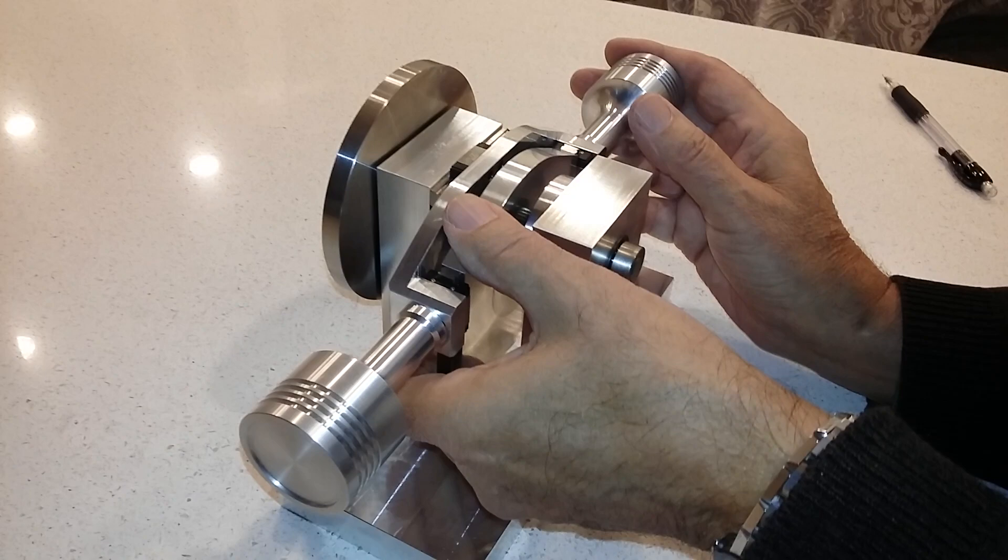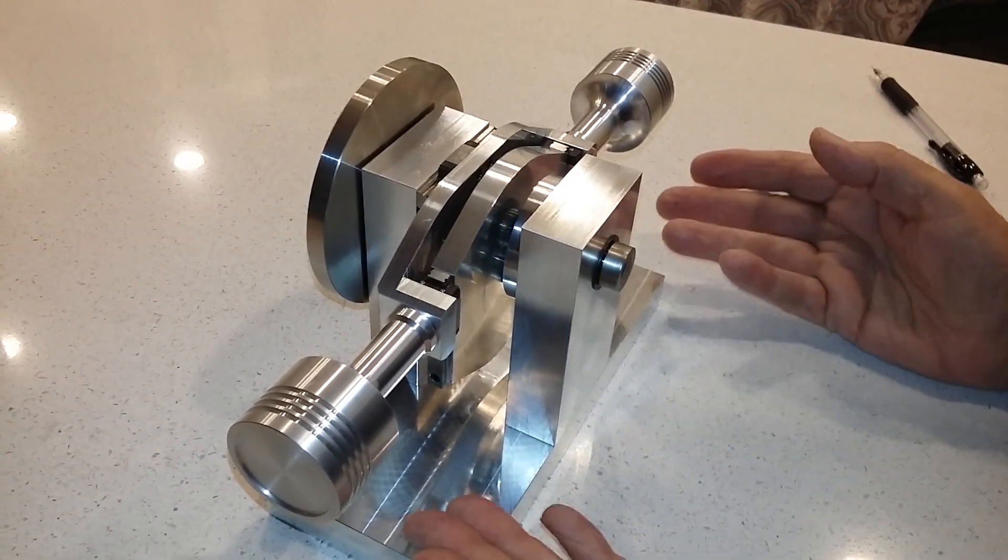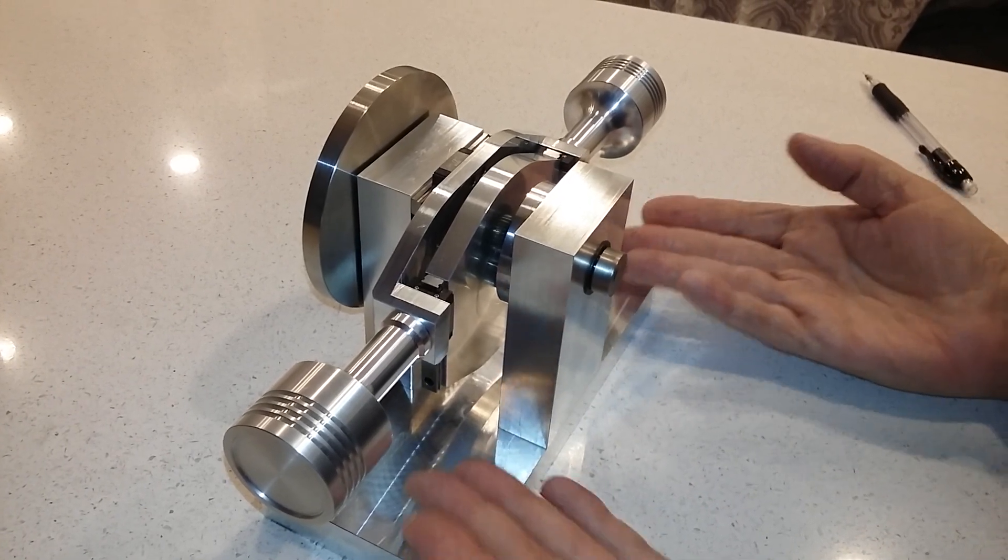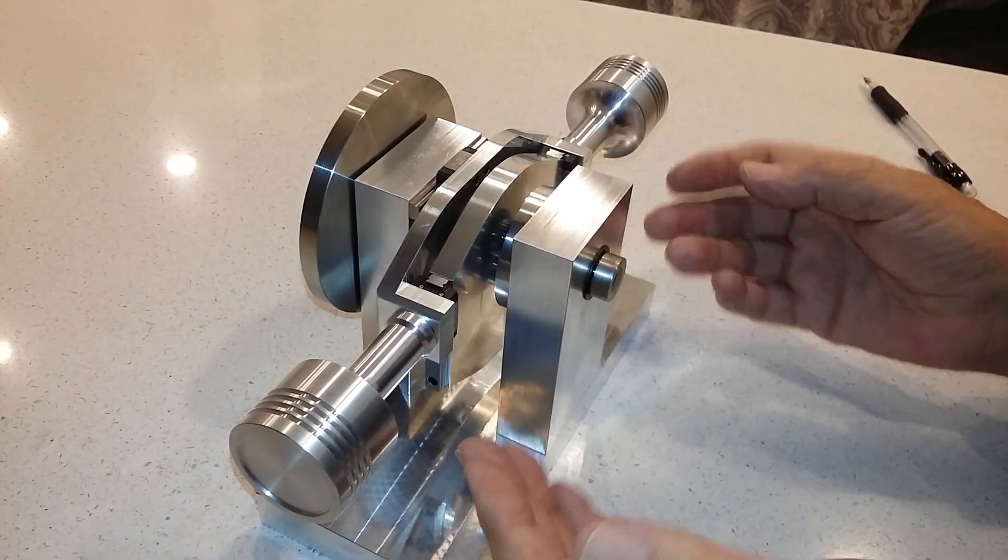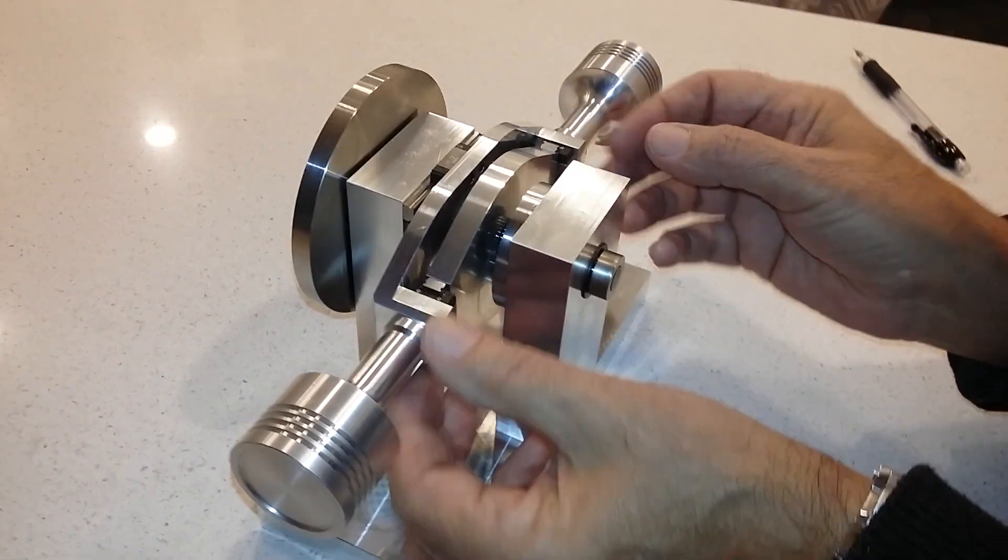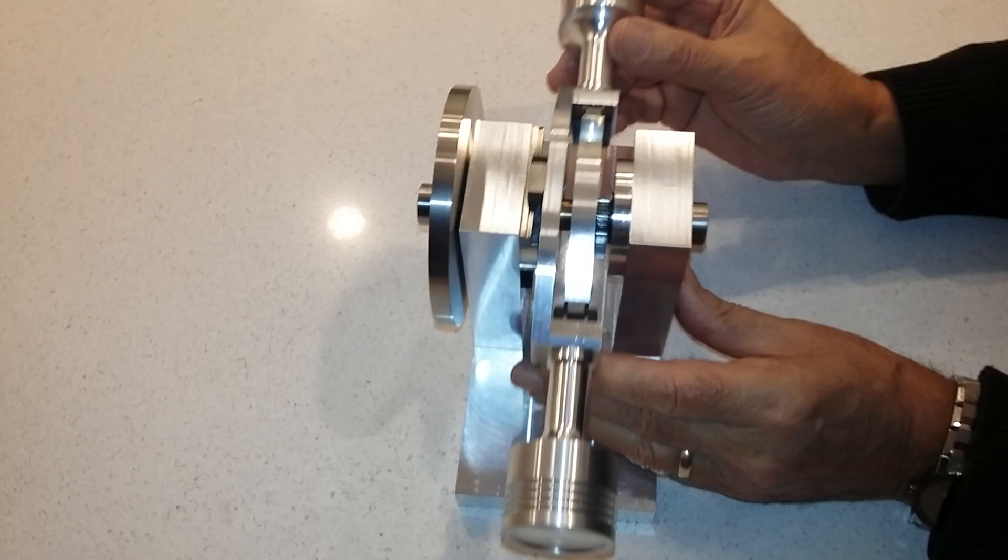It does this in this model, which depicts a horizontally opposed or flat or boxer-type engine. It does that by attaching pistons directly to what I call a Y-plate, which moves only in the Y-direction.